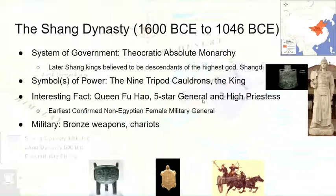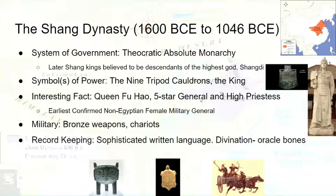Let's talk about their military. They used bronze weapons mostly, as well as chariots. In terms of record keeping, they had a sophisticated written language that we know as ancient Chinese. They would use divination through oracle bones, and that is pretty much most of what we can gather in terms of their writing. Divination, by the way, is trying to communicate with the gods to answer life's questions.